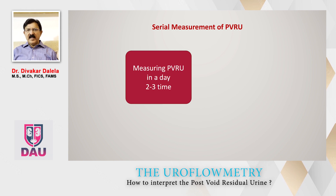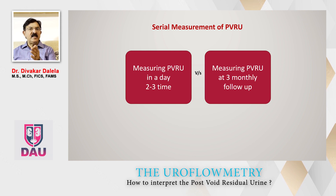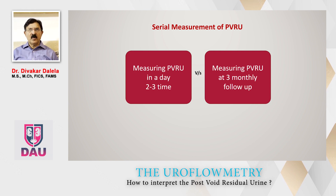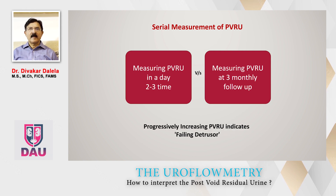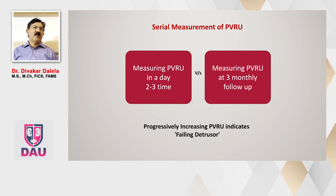It is better to do PVRU two or three times in a day, and then repeat the assessment at periodic intervals depending upon your own or institutional practice — some people do it monthly, some six-weekly, some three-monthly. For any substantial change to occur in bladder dynamics, one would expect it to happen in around three months. Remember, progressively increasing PVRU indicates a failing detrusor muscle and is of great clinical significance. That is why serial estimation of PVRU is more important than a single estimation.